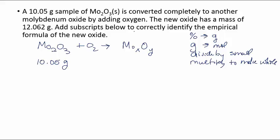No percents are given in here. But grams are given in here. So maybe I don't need to go percent to grams. I could start right here. Grams to moles, divide by small, multiply, make whole. If I could get grams of oxygen and grams of molybdenum in this compound, then I could take off running from the part where I'm starred.